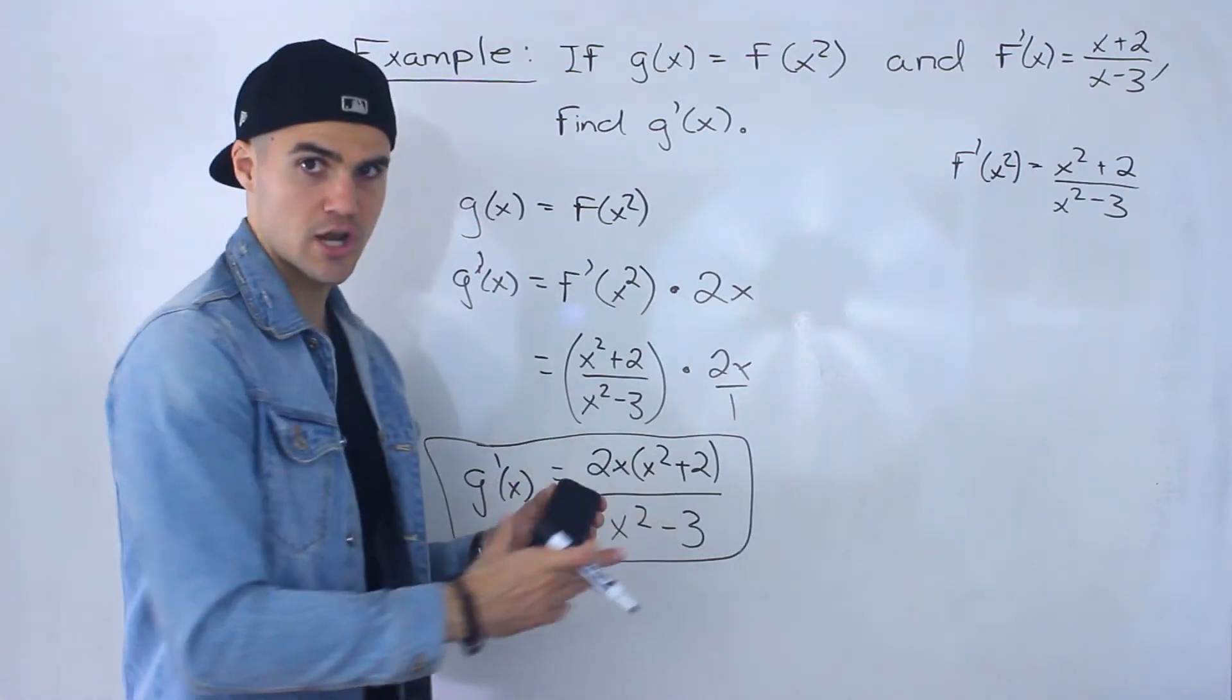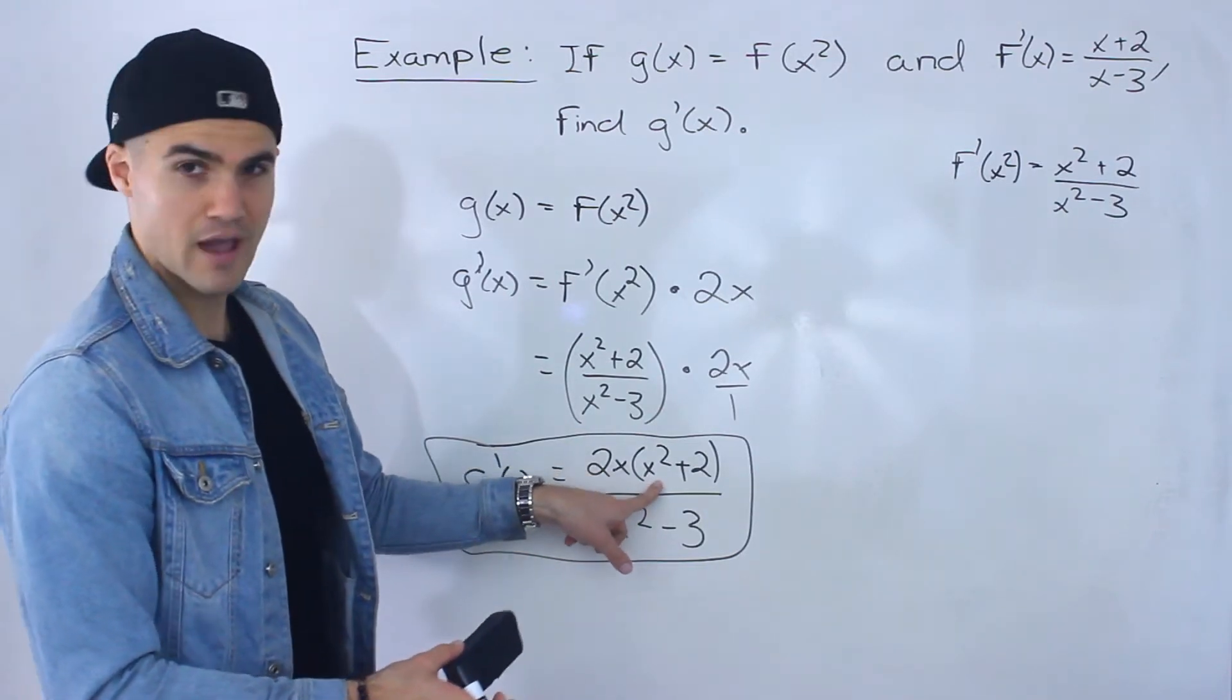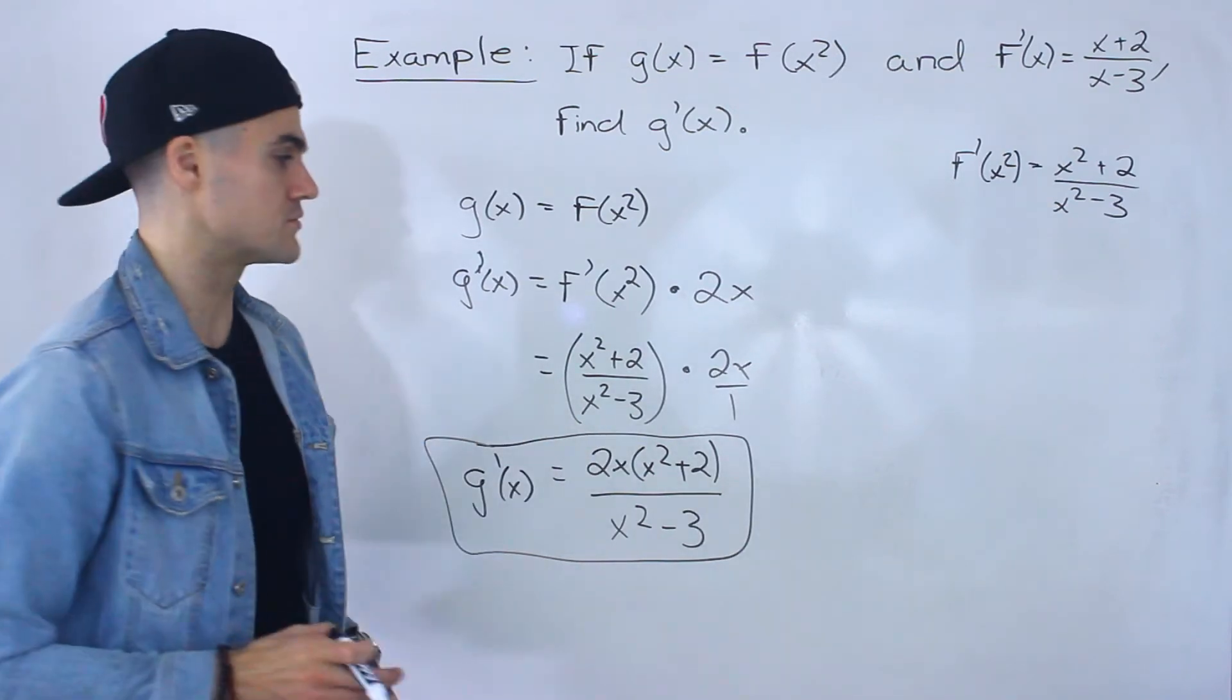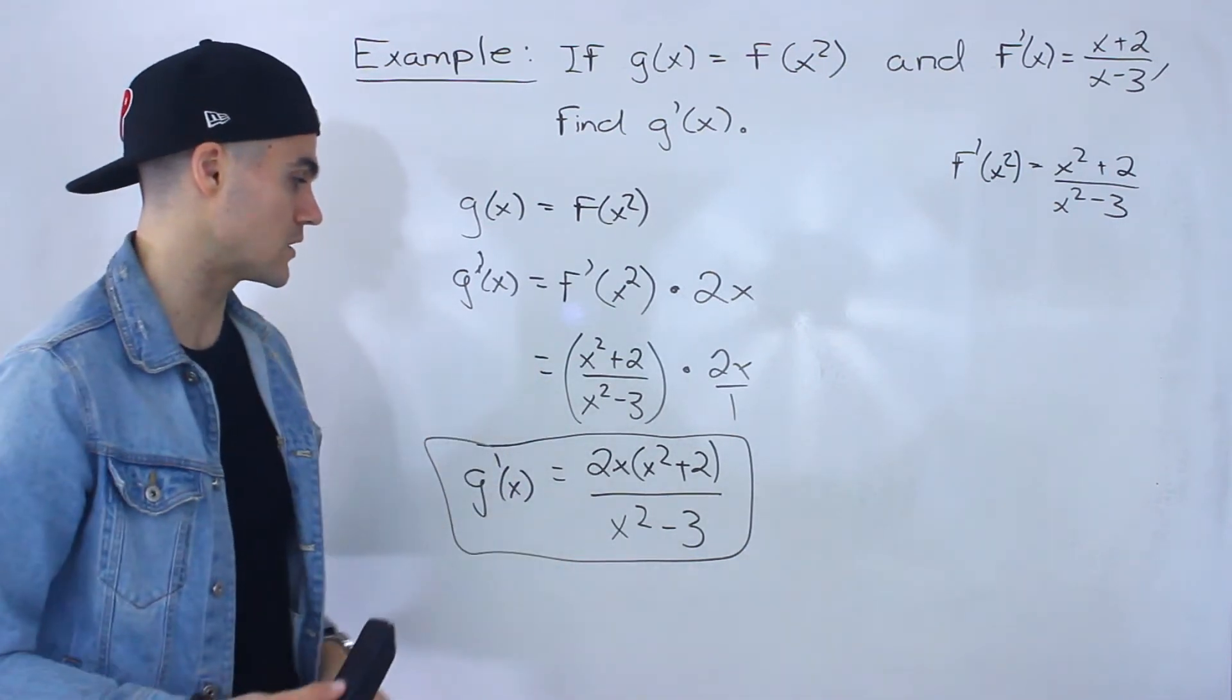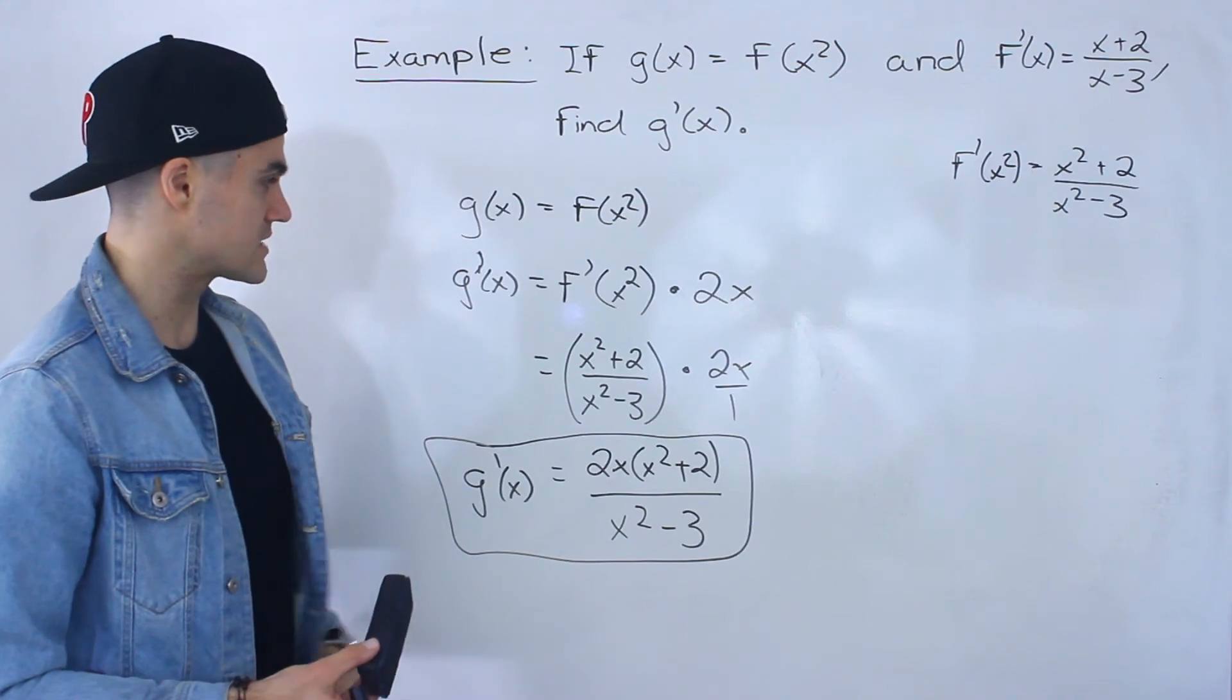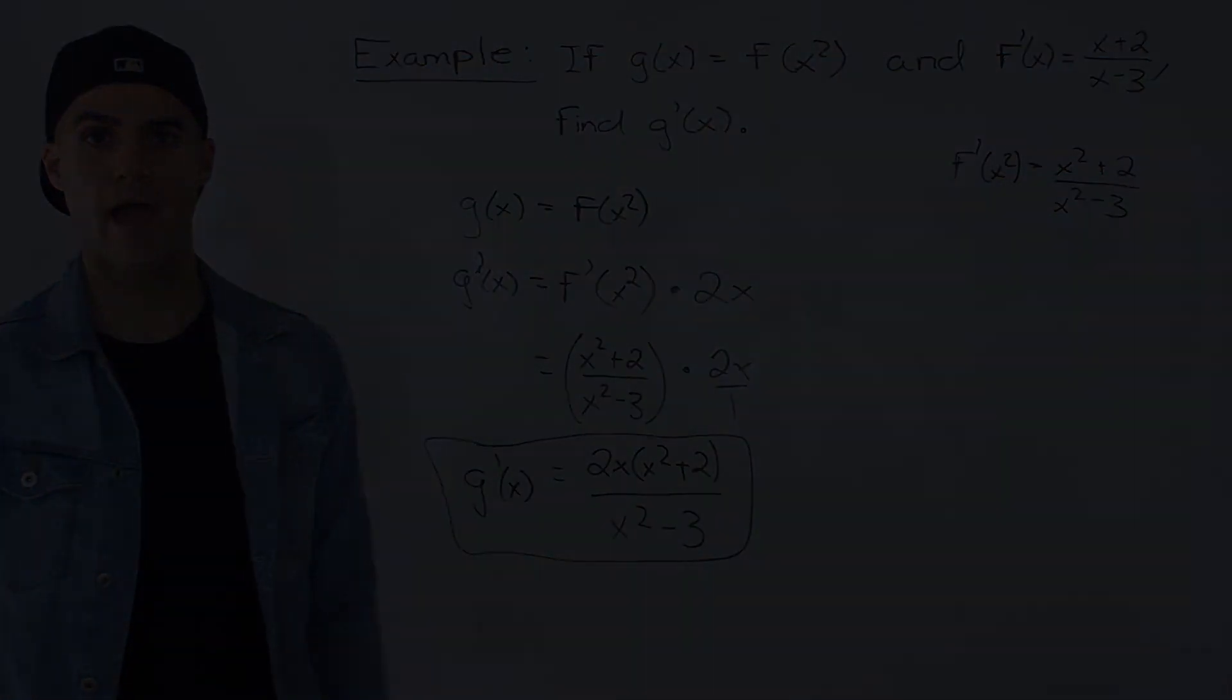Right? And you always want to check, can you factor further? But the x squared plus 2, you can't factor that. And then x squared minus 3, that's not going to factor into smooth terms because you want to factor just in case things continue to simplify further, in case things will cancel out, factors will cancel out. But in this case, nothing cancels out. So this is the final answer, the final expression for g prime of x.